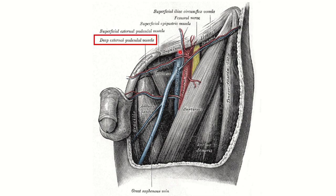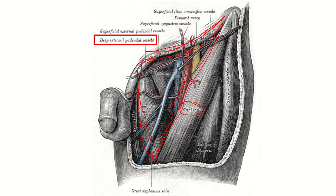Here we can see this large blue-colored structure is the femoral vein, and another blue-colored blood vessel is the great saphenous vein. We can see the great saphenous vein enters into the femoral vein, and this femoral vein lies in the femoral triangle. We can see the femoral triangle here — the inguinal ligament forms the base or superior part of the femoral triangle. This muscle is the sartorius muscle; the medial border of the sartorius muscle forms the lateral border of the femoral triangle.